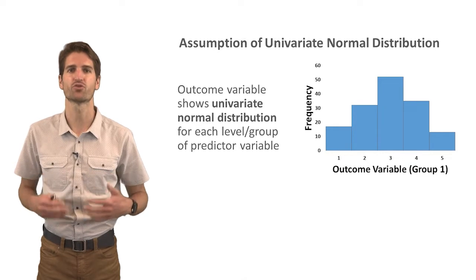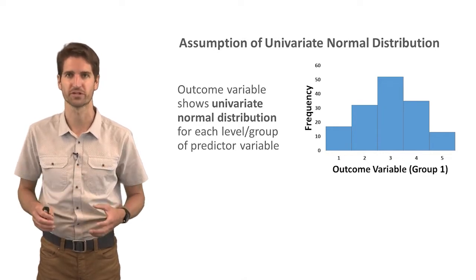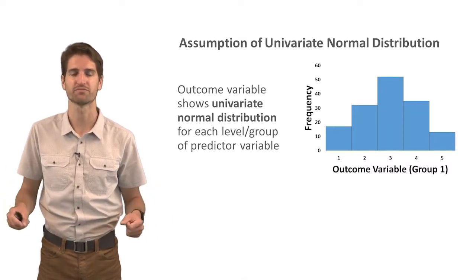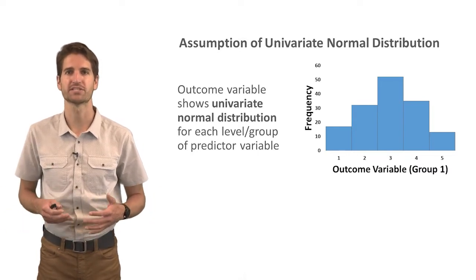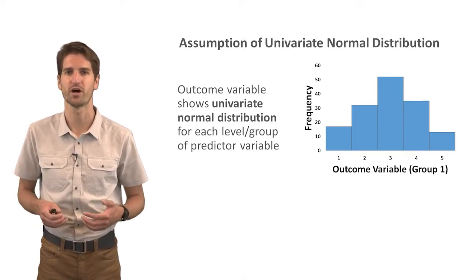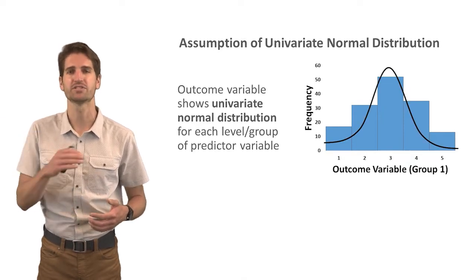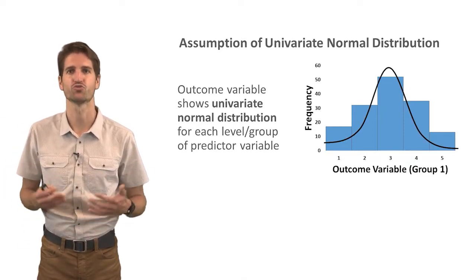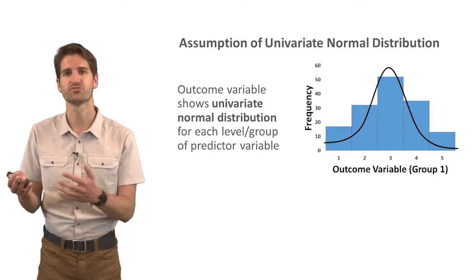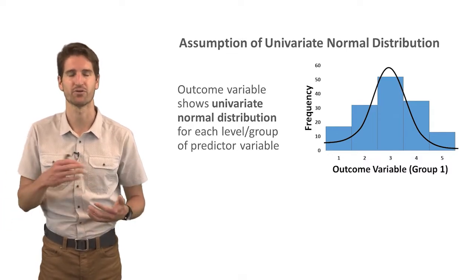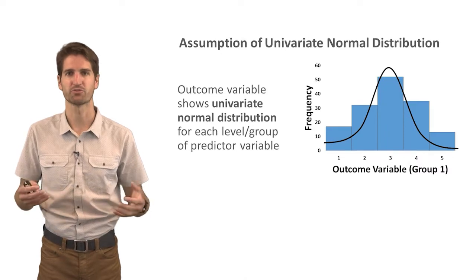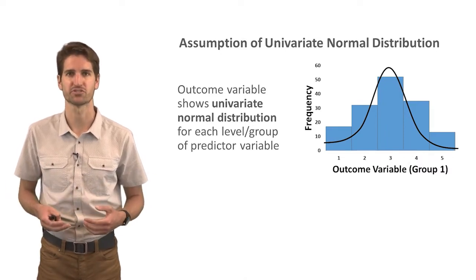The first assumption is univariate normal distribution. The outcome variable should show a univariate normal distribution for each level or group of the predictor variable — so in each of the two categories, the outcome variable should be normally distributed. A histogram is a great way to visualize this. Here we can see the frequency of scores for group one, which looks like a relatively normal distribution. We would also do the same for group two, and if both appear normally distributed, we would conclude that this assumption is met.